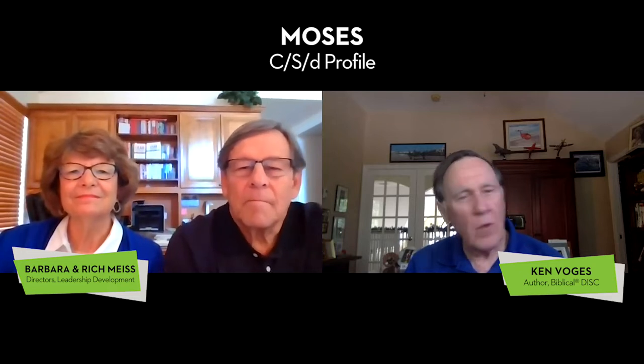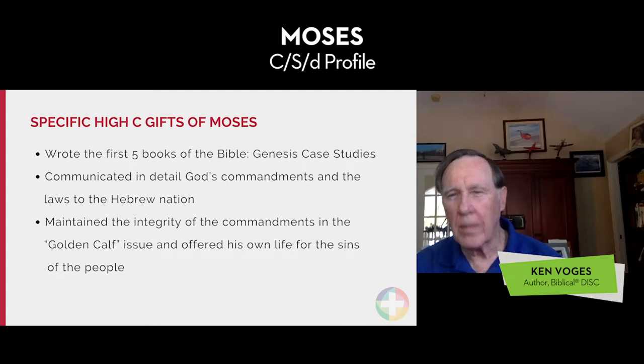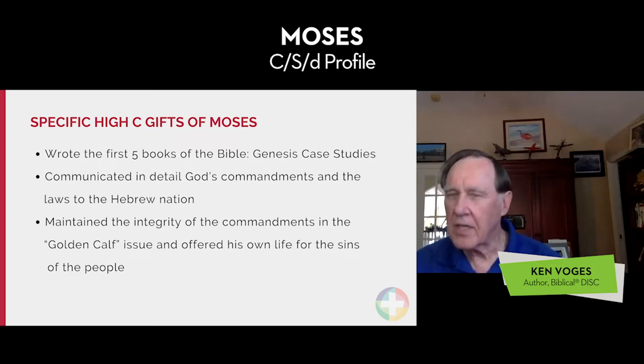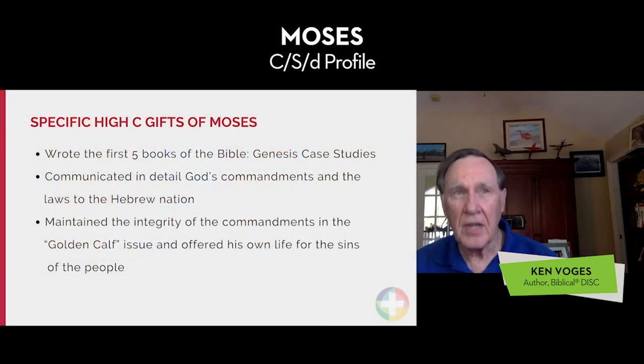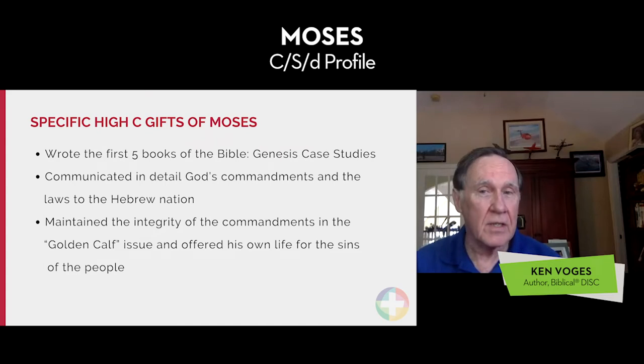You've given us a lot of scriptural references already. What are some places where we see that high conscientiousness behavior in scripture? Moses wrote the first five books of the Bible. What really impresses me from a behavioral standpoint is the book of Genesis — a lot of detailed conversation that happened 400 years before he wrote it down, meaning someone had to dictate it, and that person was God. I was able to profile characters in Genesis based on how he wrote it down, and those behavioral traits are phenomenal in their accuracy. He also communicated God's commandment laws to the Hebrew nation in great detail — that's very high C.